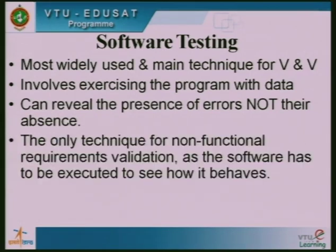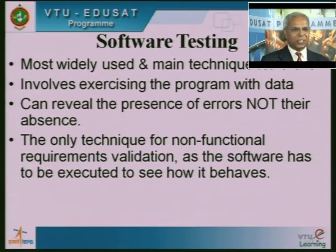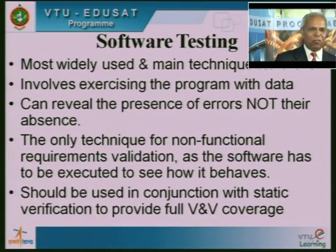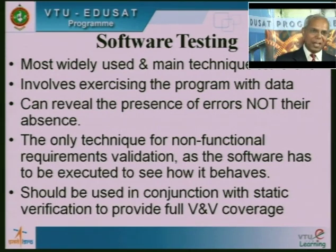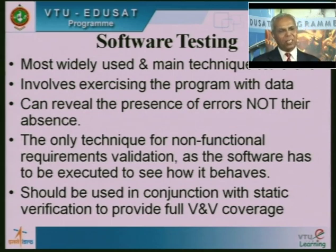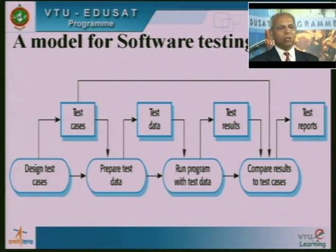Software testing is the most widely used and main technique for validation and verification. It can reveal the presence of errors, not their absence. It is the only technique for non-functional requirements validation, as the software has to be executed to see how it behaves — for performance and reliability. Testing should be used in conjunction with static verification to provide full V&V coverage. Testing alone is not enough; inspection and testing are two complementary techniques used for software quality control.